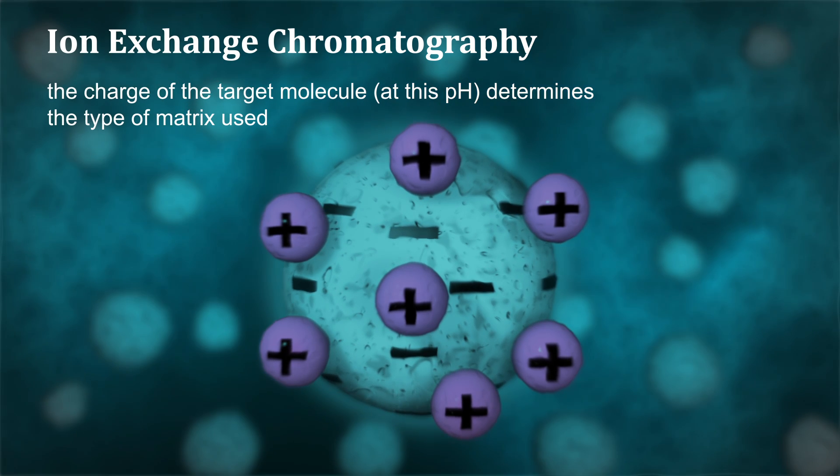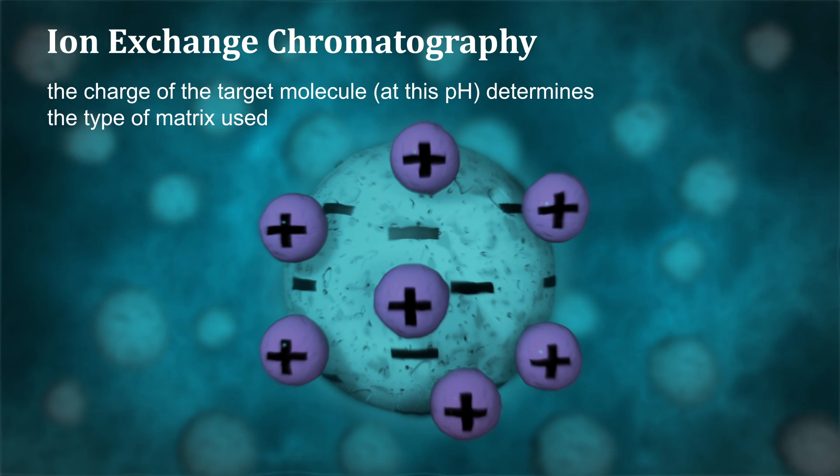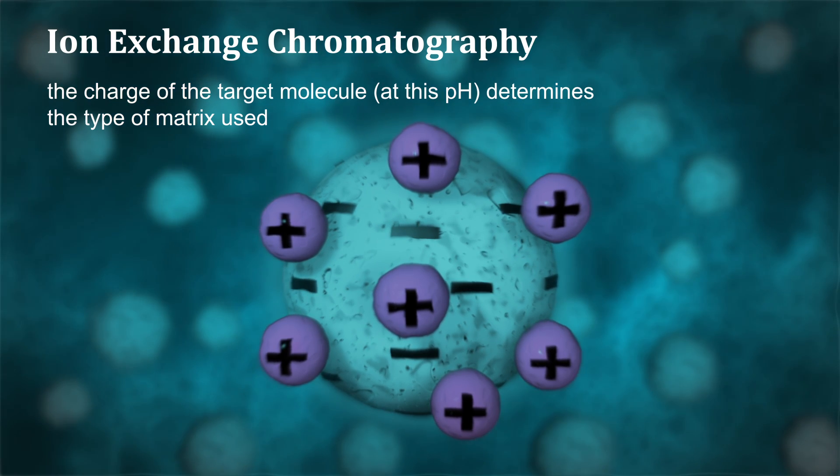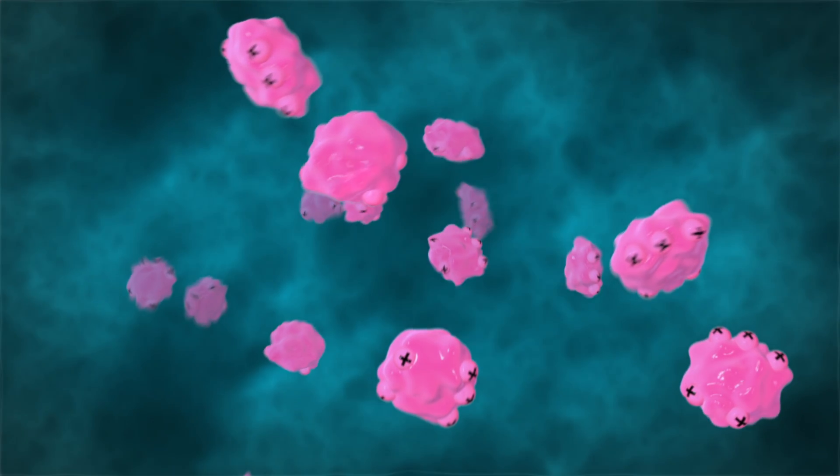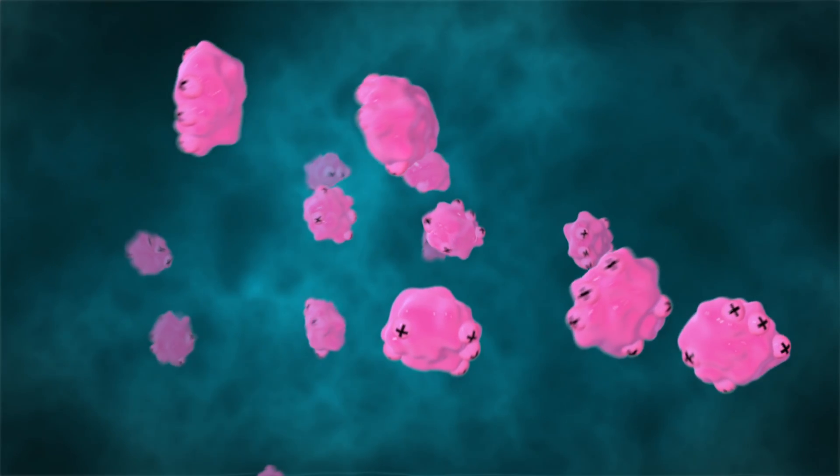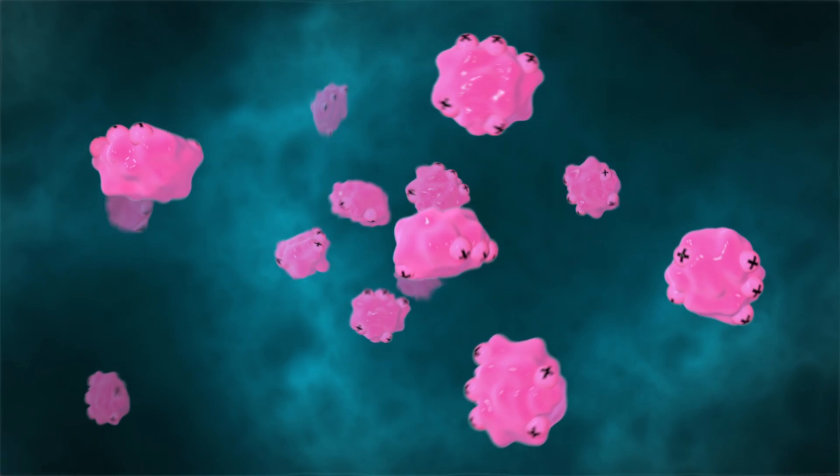The charge of the target molecule, which is pH-dependent, determines the type of matrix used. At pH-7, cytochrome-C has an overall positive charge, therefore cation exchange chromatography is used to target this protein.